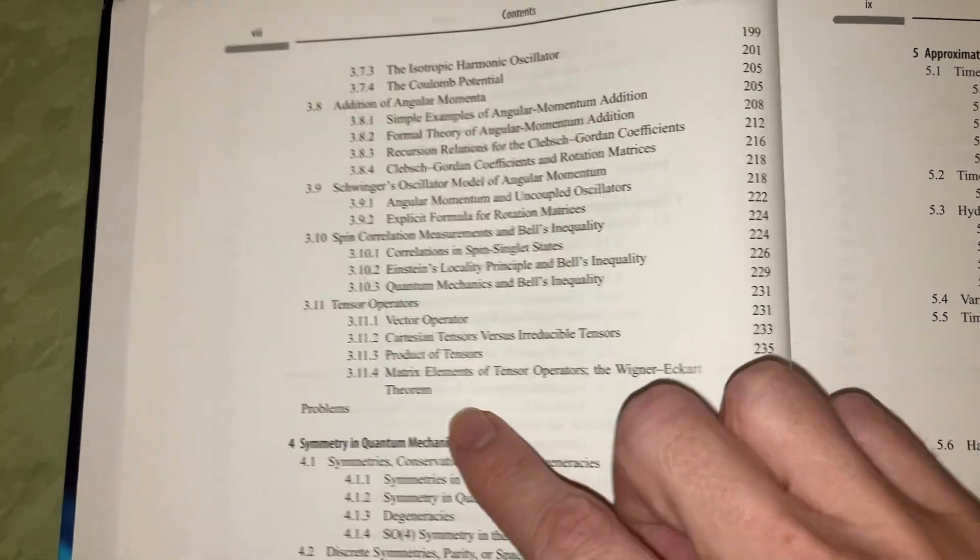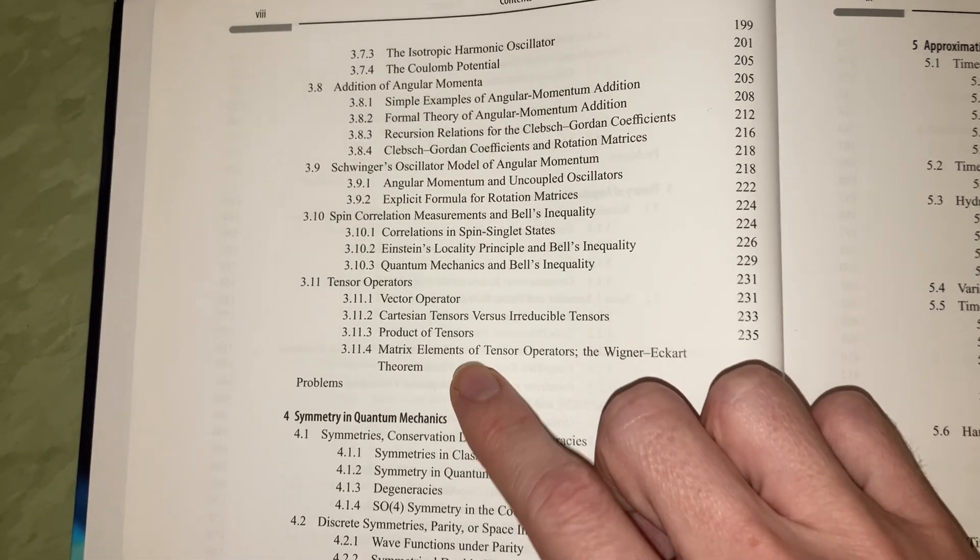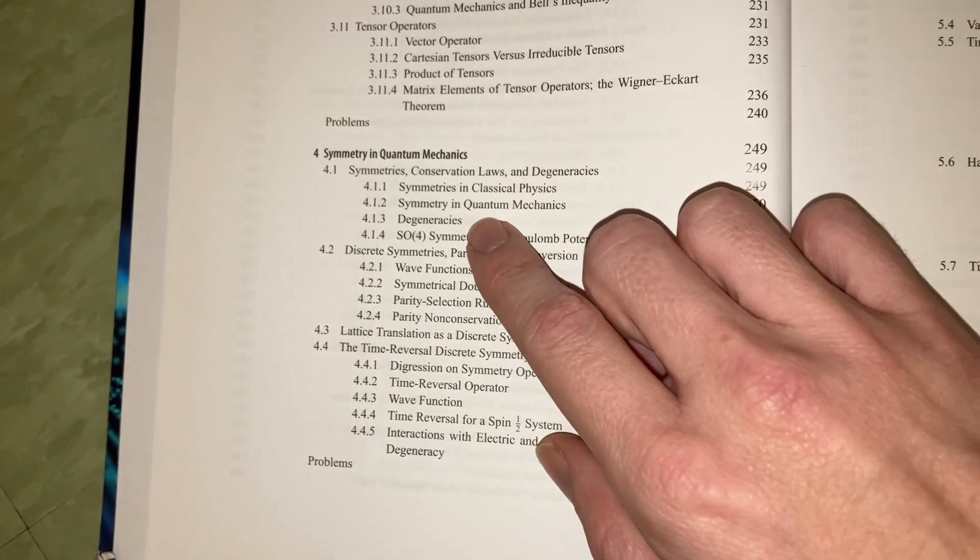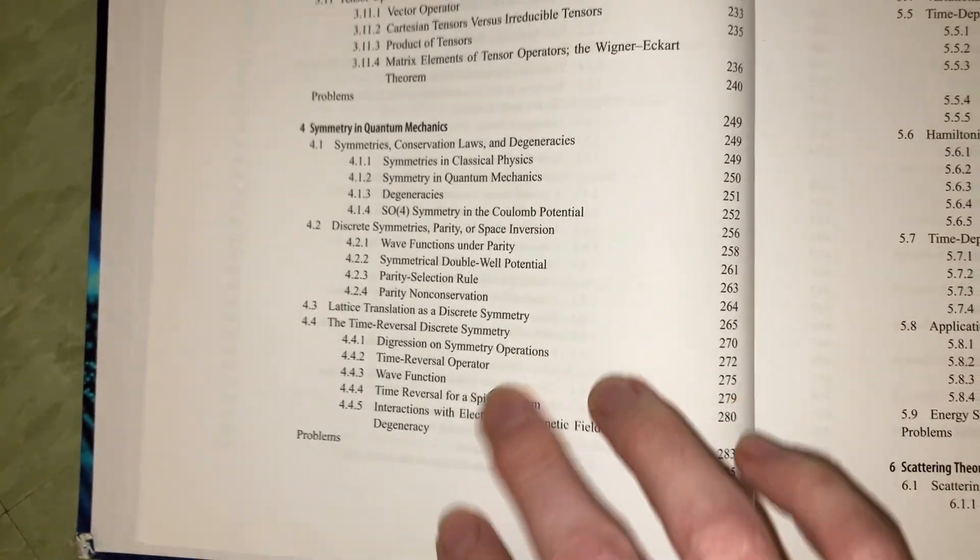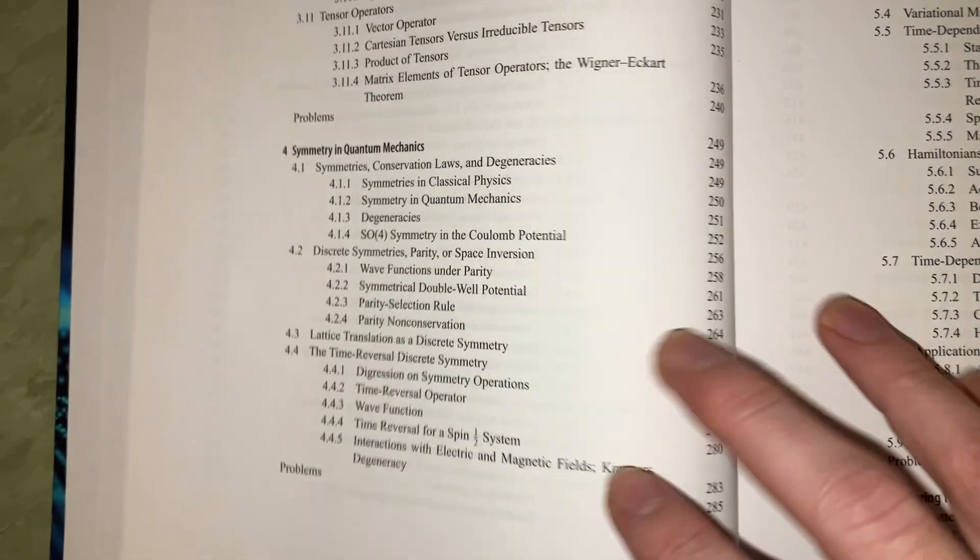We have tensor operators, which I haven't taken a look at. That might be cool. And then we have like symmetries and stuff. We definitely have seen some symmetries here and there, but I'm sure that there's more mathematical, like a lot more mathematical symmetries we should be taking a look at.